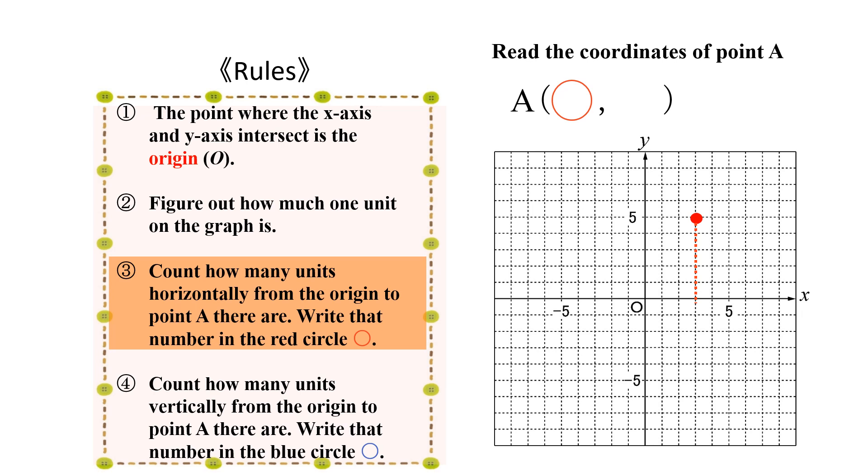Now, let's actually read the coordinates of point A. First, draw a line perpendicular to the x-axis from point A. Count how many units it is from the origin. We see that it is three units from the origin. Since we have just confirmed that each unit is equivalent to one, we can now write the coordinate in the red circle.